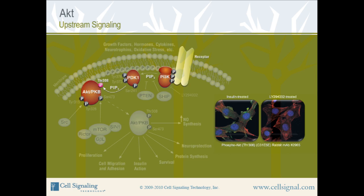With LY-294002 treatment, PI3K is inhibited and phosphorylation of AKT threonine 308 does not occur. Note loss of green signal in the right panel.